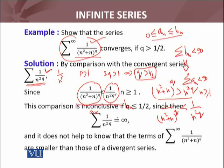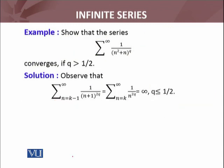The comparison is inconclusive — we cannot say anything if q is less than or equal to 1/2. Because in the comparison test, if summation b_n diverges, we cannot conclude anything about summation a_n. It is only if a_n diverges that we can conclude b_n diverges. So the comparison test is inconclusive when q ≤ 1/2, since the larger series b_n diverges but that doesn't help when terms of a_n are smaller.